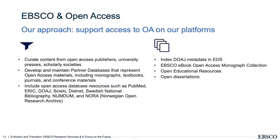For open access specifically, we index many thousands of publishers, including many partner resources whose publications are indexed in EBSCO Discovery Service and our research platforms. Examples include DOAJ — the Directory of Open Access Journals — metadata in EDS. We also provide access to different open access collections, including open access monographs, open educational resources, open dissertations, and so forth.